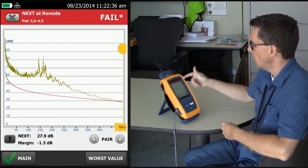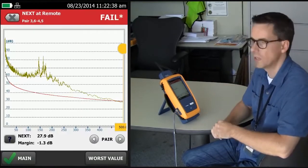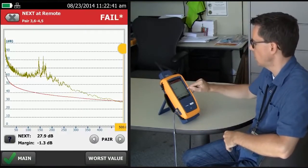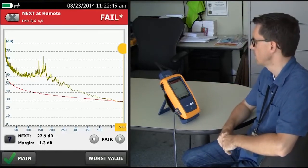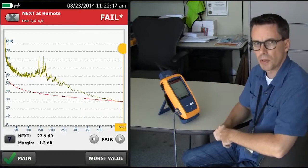There's not too much more to be gained from looking at this graph in terms of diagnosing crosstalk. We can see that it failed at the top end of the frequency range, around about 500 megahertz. Let's remember that 3-6, 4-5.